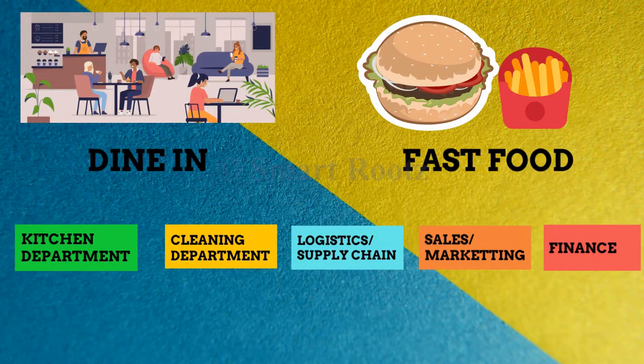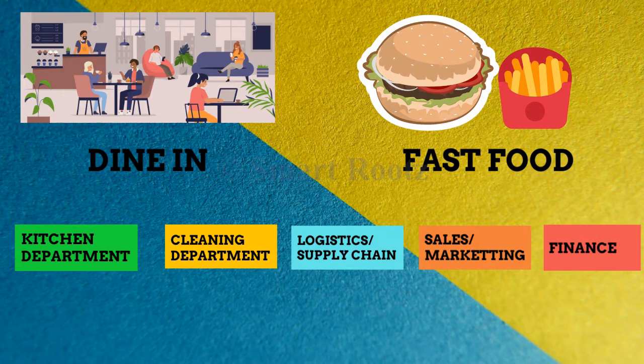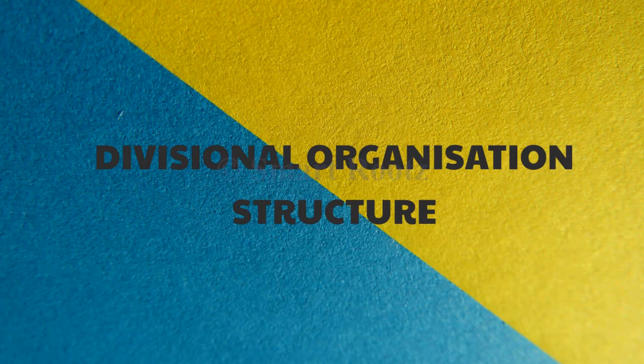If Jo decided to organize based on divisions and not functions, the organizational structure will look different. Say the restaurant specializes in dine-in and also a fast food chain — it can decide to have separately a kitchen, marketing and finance department for dine-in and similarly for the fast food, so that each division can function separately. This is a divisional organizational structure, and within each division there is a functional structure of organization.